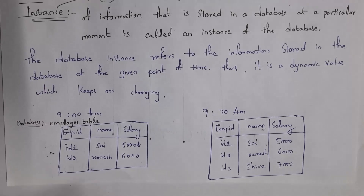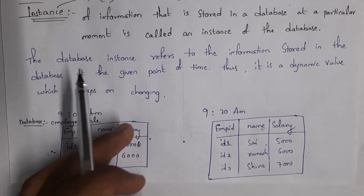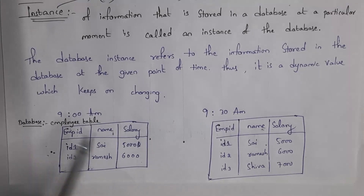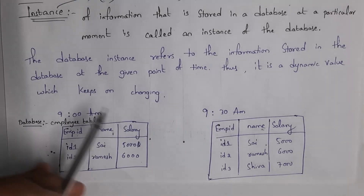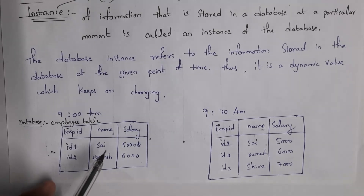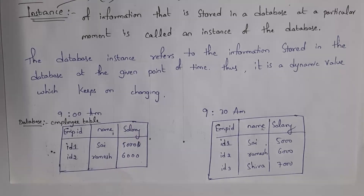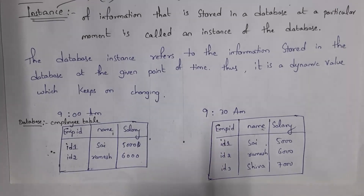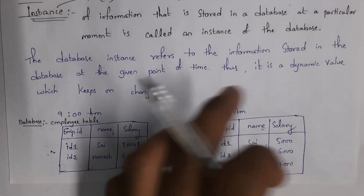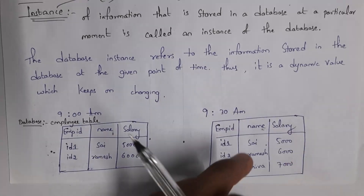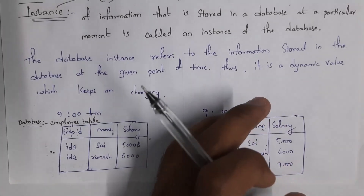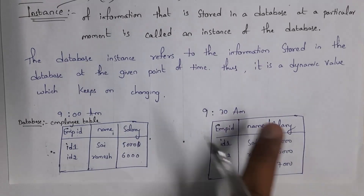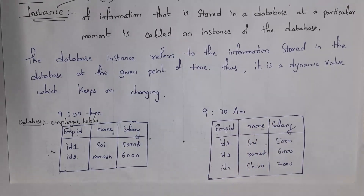For example, at 9am I open this database — this database contains certain information, we call it as instance. I close this database and again at 9:30 I open this database. Whenever I open this database at 9:30, there are three records inside this table — we call it as instance. At a particular point in time, whatever information is present inside my database, we call that information as instance.